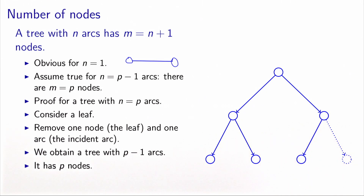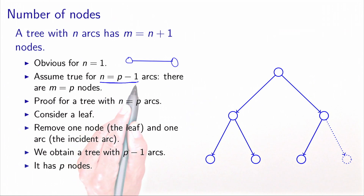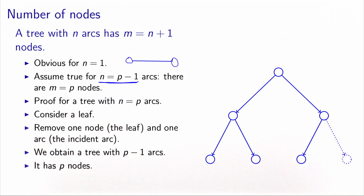Then we will proceed by induction. We will assume that the property is true for n equals p minus one arcs — in this case, the number of nodes would be p. And we need to prove it now for a tree with n equals p arcs.